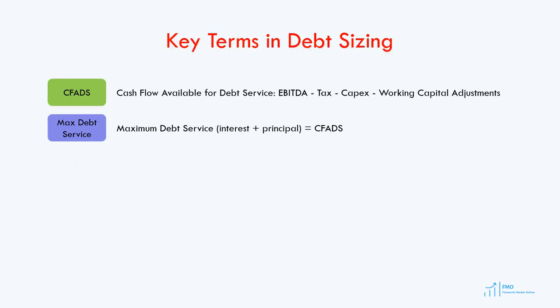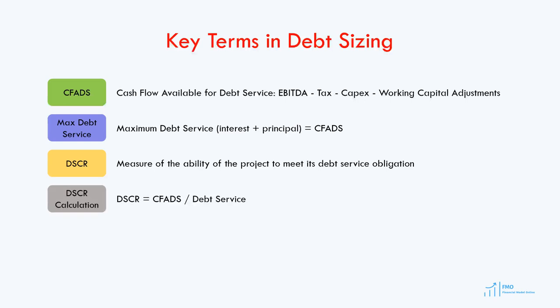Debt Service Cover Ratio, or DSCR, is a measure of the ability of the project to pay the debt service, and DSCR is defined as CFADS divided by debt service. So if DSCR is equal to 1, then debt service is equal to CFADS — therefore, as we said, CFADS is equal to the maximum debt service. Finally, project riskiness manifests itself in DSCR, interest expense, and additional risk mitigation measures taken by the lenders that may also influence the debt size.